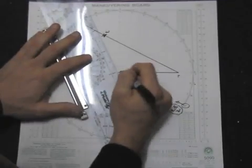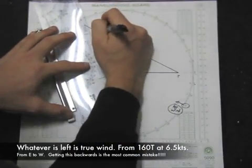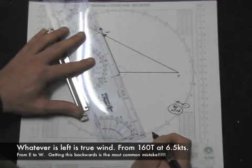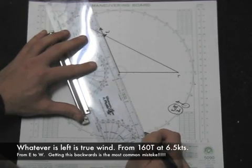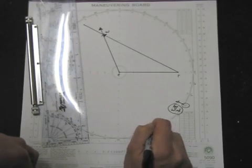And then whatever's left from E to W is the true wind. Always from E to W. This is the most common mistake, is getting this backwards. So from E to W is the true wind. You look at the opposite side, and you label it about 160, in this case, at 6.5 knots.